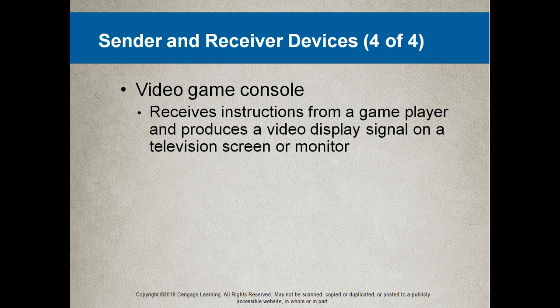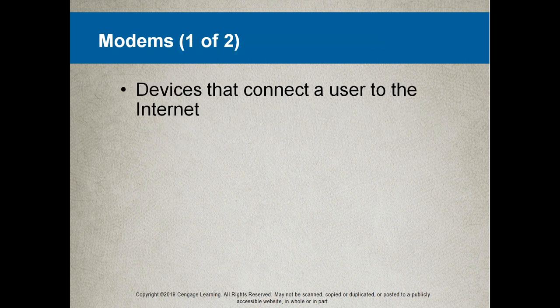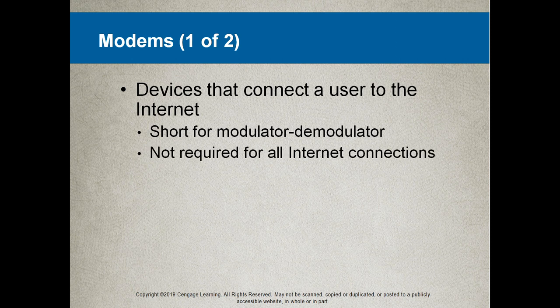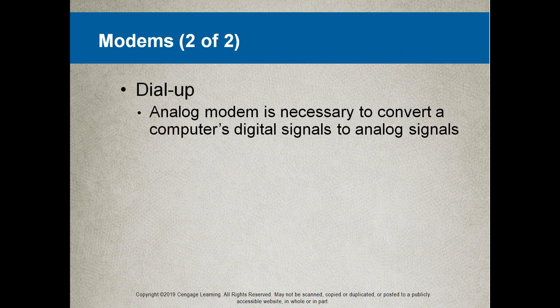Video game consoles receive instructions from a game player and produce a video display signal on a television screen or monitor. Modems are devices that connect a user to the internet — the word is short for modulator-demodulator. It is not required for all internet connections. Dial-up, not really used anymore, is when you use an analog modem to connect your digital computer to the analog telephone system.